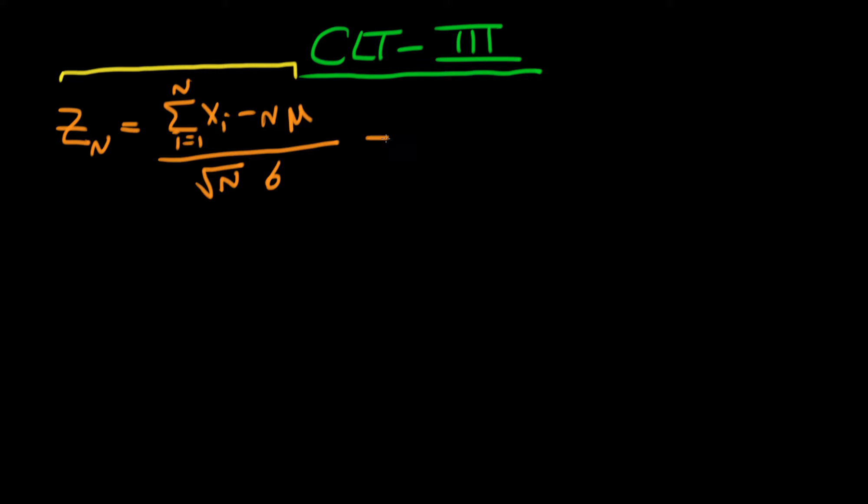Okay, so the numerator of this we can actually combine in terms of a single summation. That's just equal to the sum from i equals 1 to n of xi minus mu. I'm summing over the mu as well because if I sum over mu n times I'm just going to get n mu which is what we had before, so that's all okay.